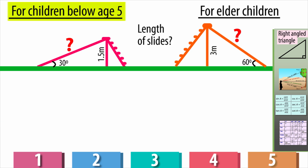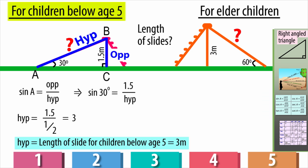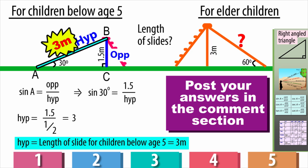So, to find the height of this slide for the children below age 5, we consider the right angle triangle ABC. Here, this slide acts as the hypotenuse and its height as opposite side for the angle 30 degrees. Therefore, here we use sine or cosec because they deal only with the hypotenuse and the opposite side. And the length of the slide for the children below age 5 is 3 meters. Now, this is your task to find the length of the slide for the elder children. Post us your answers in the below comment box.